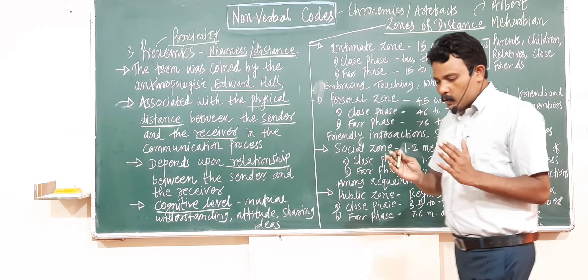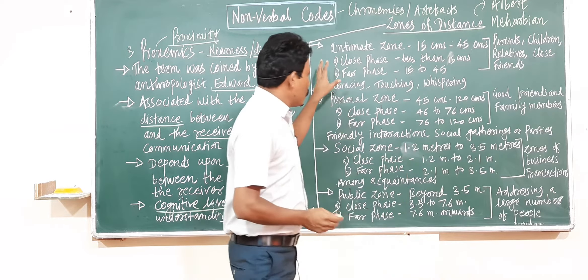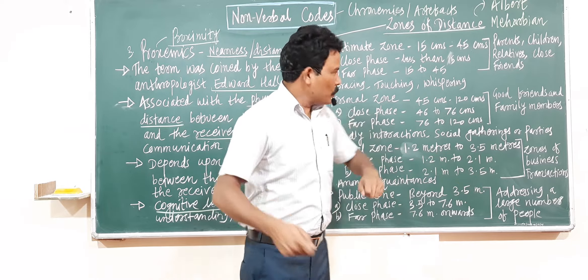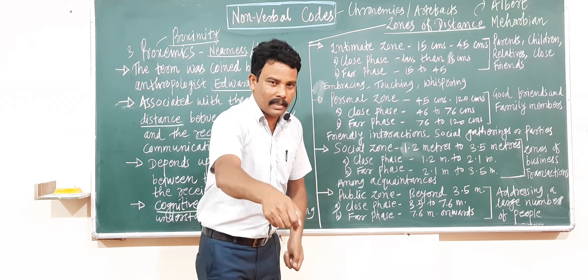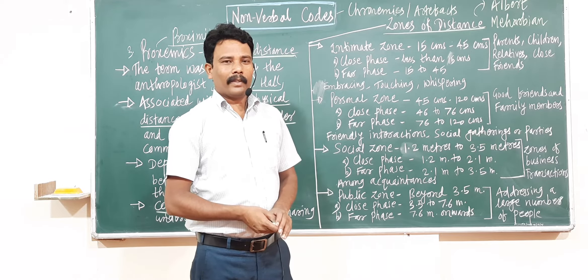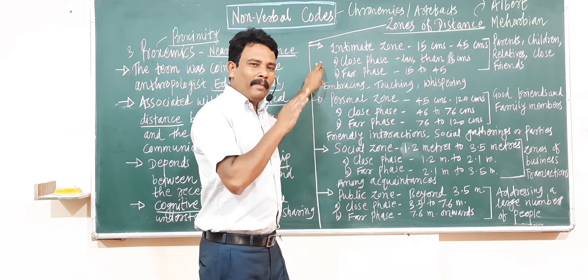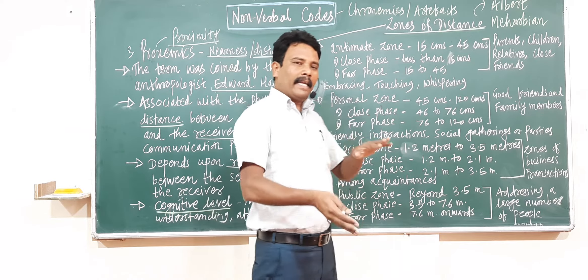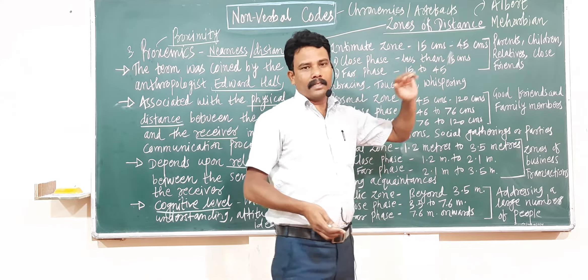Please do not get confused. These zones are given as approximate distances — it doesn't mean that you should take a measuring scale before starting communication. The distances given are approximate categorizations.